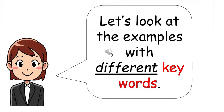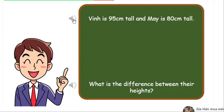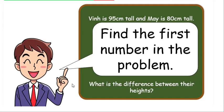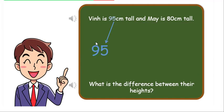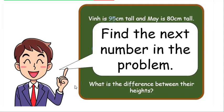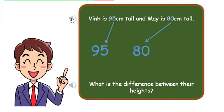Let's look at the examples with different keywords. Hun is 95 centimeters tall and Mei is 80 centimeters tall.